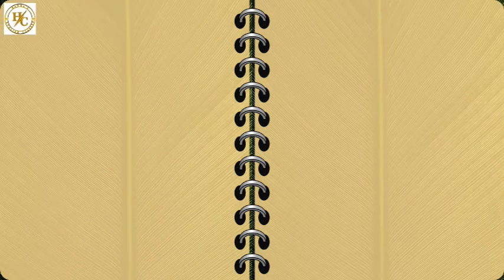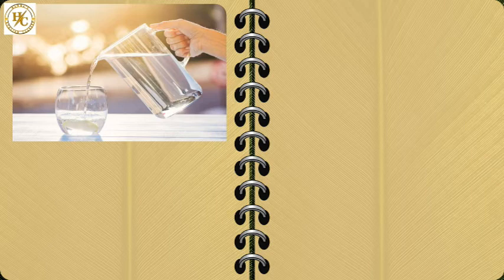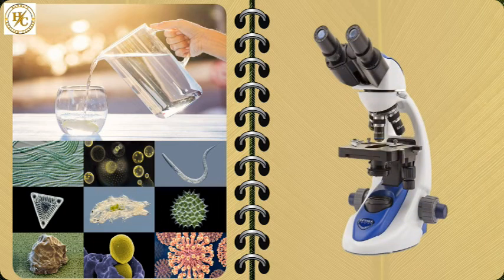Let's learn some new words. First: potable water — water that does not endanger our health in any way when we drink it is called potable water. Second: microorganisms — a living thing that cannot be seen by the naked eye or even with a magnifying glass. Third: microscope — an instrument for looking at very tiny things which we cannot see with our eyes or even through a magnifying glass.